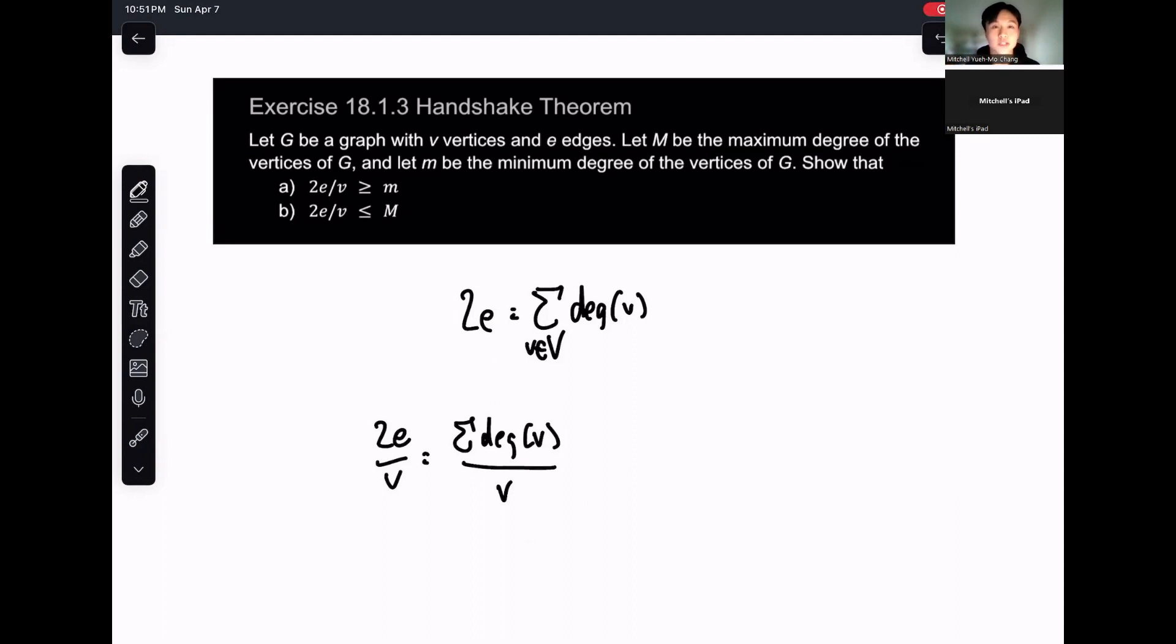What we know about averages is that an average is always greater than or equal to the minimum of a given set. That's a property from algebra that we've used many times before.